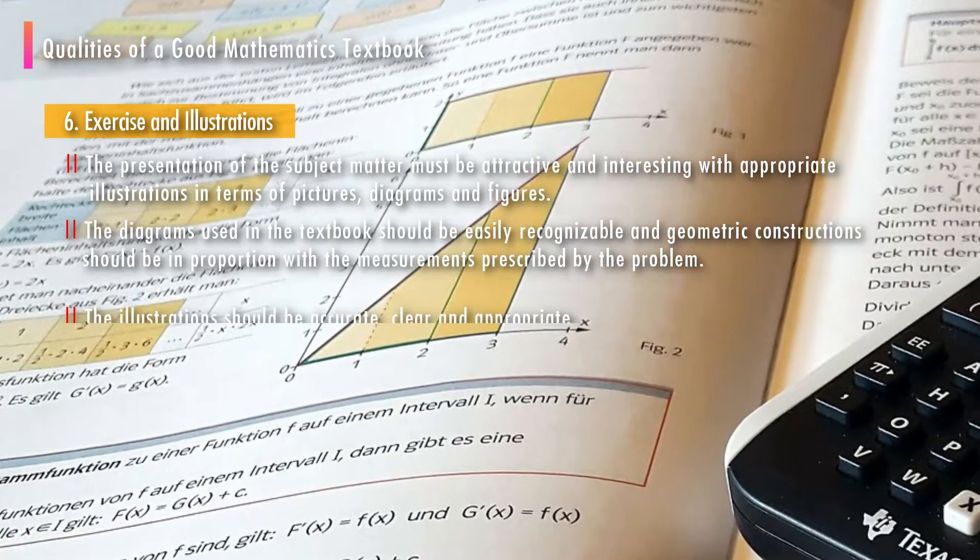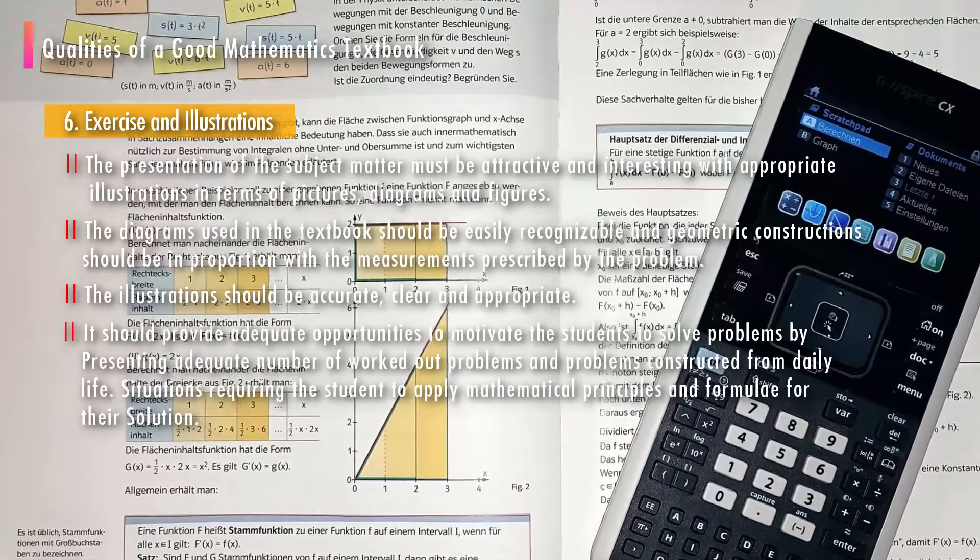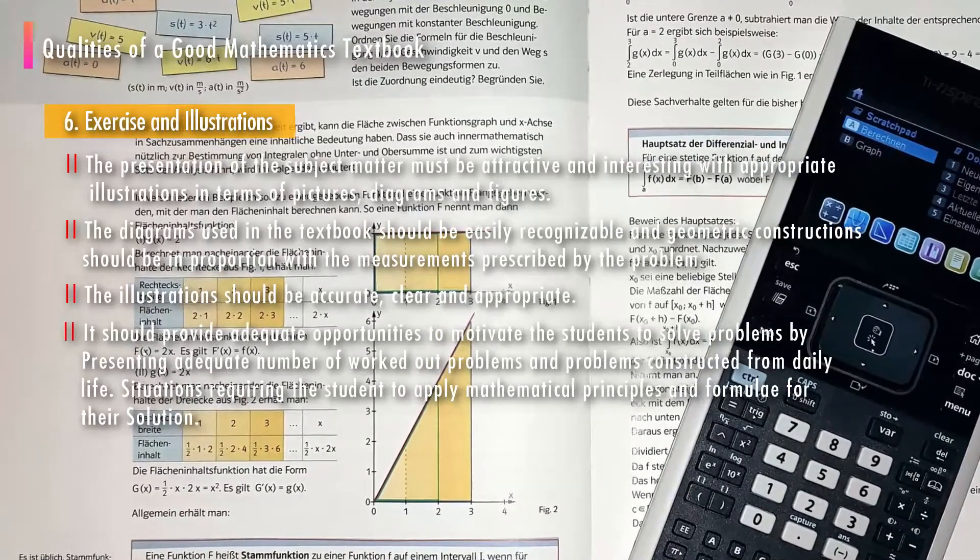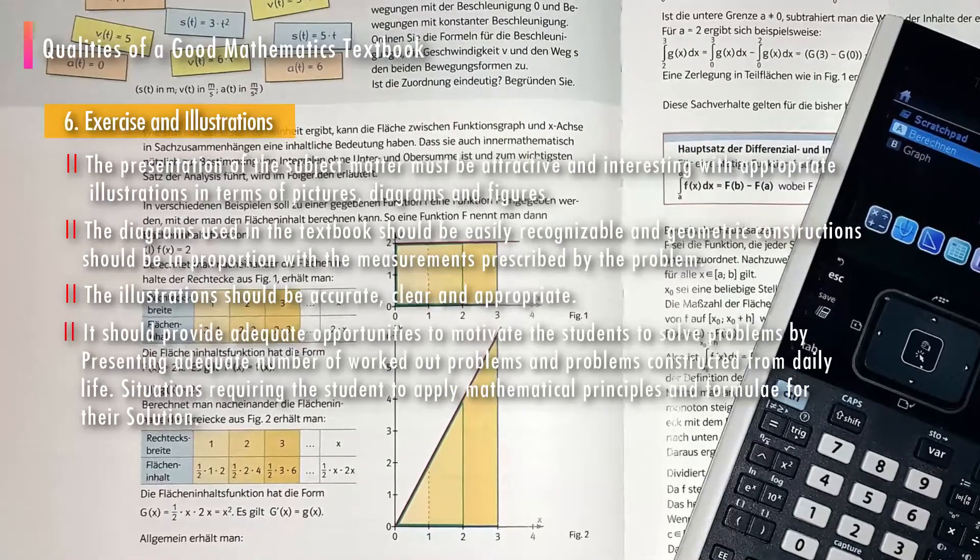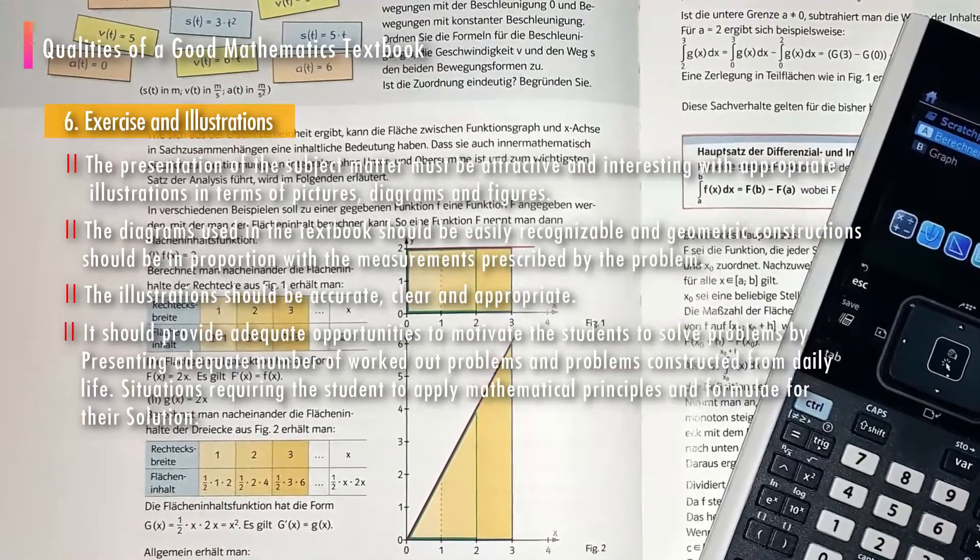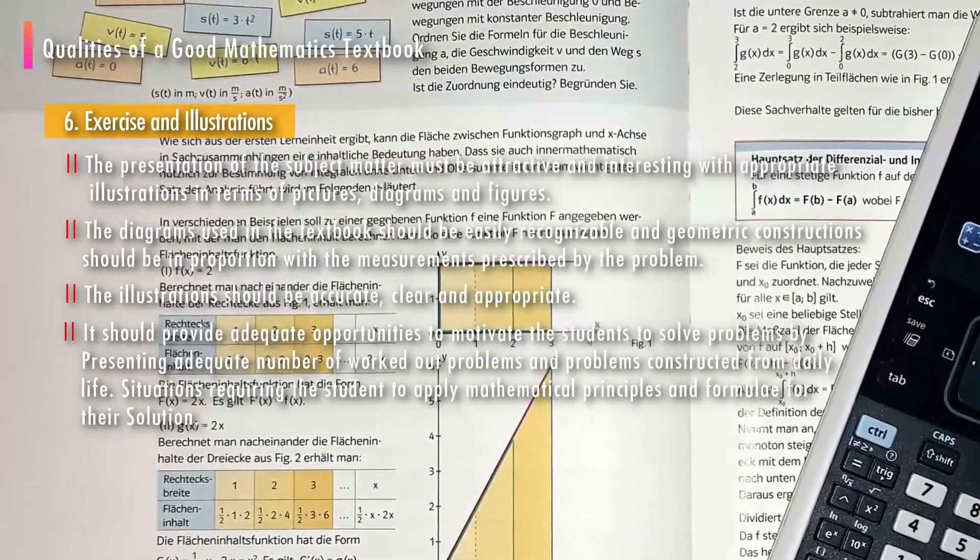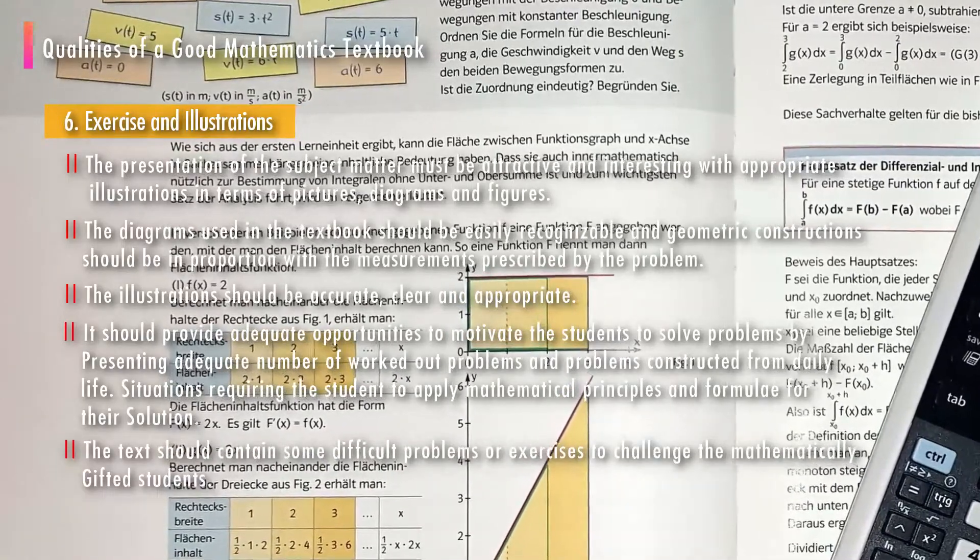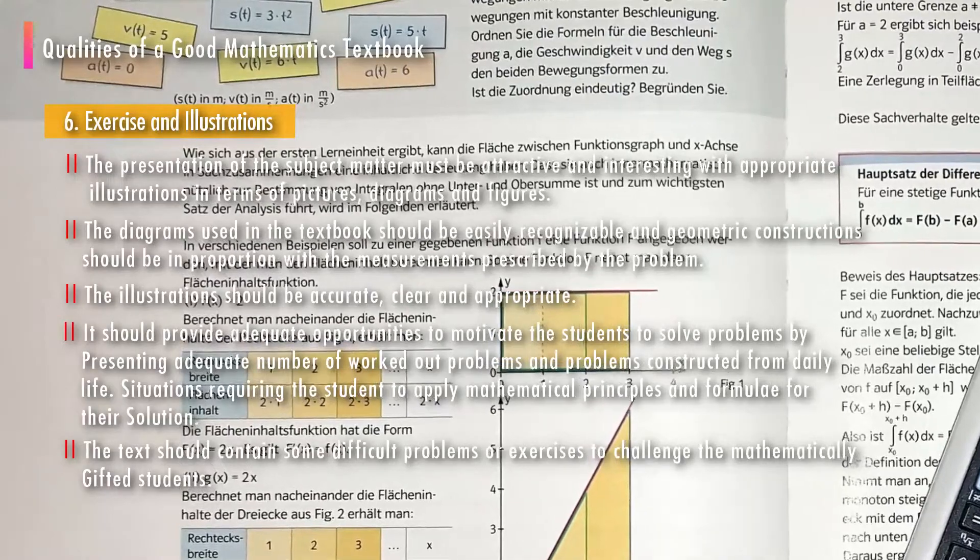The illustration should be accurate, clear, and appropriate. It should provide adequate opportunities to motivate the students to solve problems by presenting adequate number of worked out problems and problems constructed from daily life situations requiring the student to apply mathematical principles and formula for their solution. The text should contain some difficult problems or exercises to challenge the mathematically gifted students.